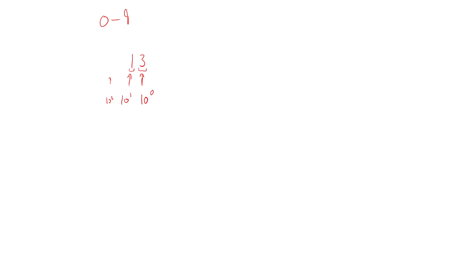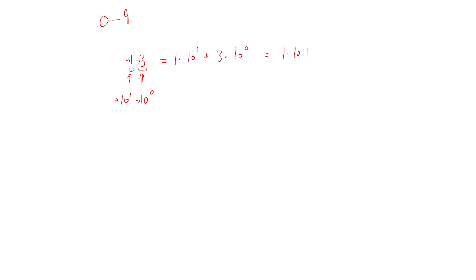If you remember your early education, you'd recall they would refer to this as the ones, this as the tens, then the hundreds, the thousands, and so on. Each of these digits represents one of these powers, and what we can do is take each digit and multiply it by its respective power, then add them together to get the actual value. So if you take one multiplied by 10 to the power of one, and add that to three multiplied by 10 to the power of zero, you get one times 10 plus three times one — because 10 to the power of zero is one — giving us 10 plus three, which equals 13.